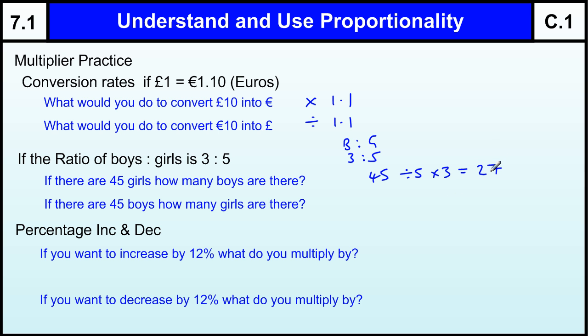So there will be 27 boys for 45 girls. If there are 45 boys, so this time we've got 45 on this side and we want to find this one. Then we need to divide by 3, which would be 15, and then times by 5. And 5 times 15 is 75.